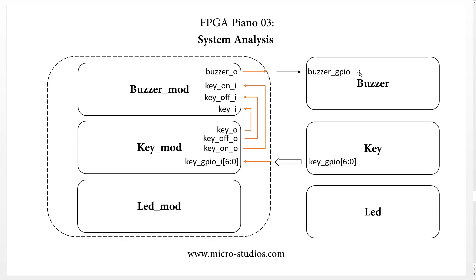Next, we have one LED on our hardware, so we have the LED GPIO control pin. This module shows whether a key is pressed or not. When a key is pressed, the LED turns on, and when the key is released, the LED turns off.